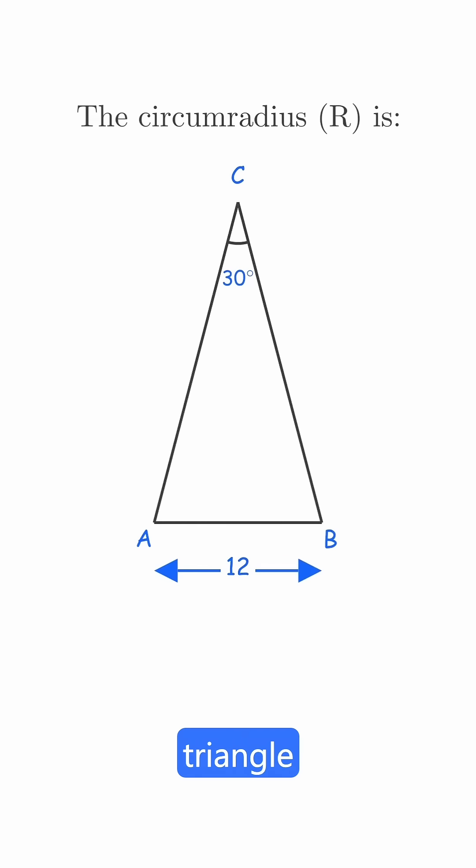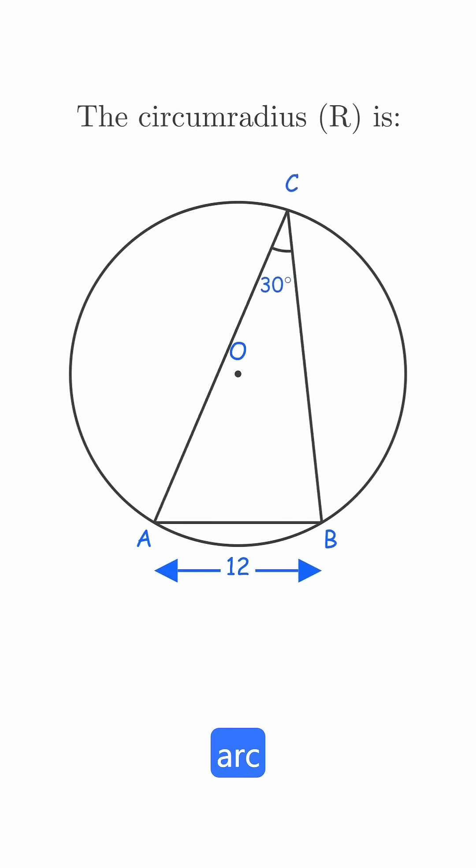First, any triangle has a unique circumcircle because the angle subtended by a chord at the arc is always constant. That means the third point lies on the same circle.